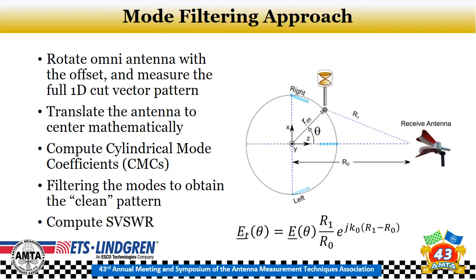Last year, we introduced this mode filtering approach. Essentially, we place the antenna at the edge of the turntable and rotate it through a full 360 degrees, obtaining vector data between the transmit and receive antennas. Mathematically, we can translate the antenna to the center using an array-based approach, as shown in the equation on screen. From that, we compute the cylindrical mode coefficients, and after the translation, the antenna mode is mostly concentrated in the lower orders. We can then apply a filter to extract the true antenna pattern without the effects from reflections in the chamber.